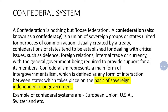Confederal is a type of federalism in which the power is divided between center and its states, but in this type of federalism the states are more powerful. The states have more autonomy, more freedom, and more sovereign authority in their own state, their own region, their own territory.